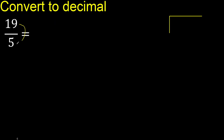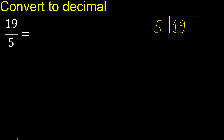19 divided by 5. 1 is less, therefore next — 19. 19 is not less, therefore we proceed with 19.